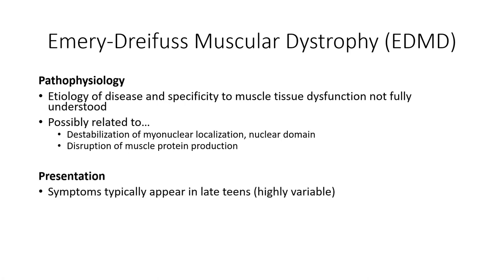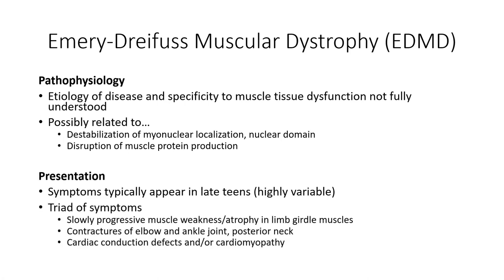As with limb-girdle muscular dystrophy, the onset of symptoms is highly variable depending on the specific mutation. The patient initially presents with slowly progressing muscular weakness, particularly in the limb-girdle musculature. Muscle contracture is also observed, particularly in the muscles controlling elbow, ankle, and cervical spine function, and can actually precede observed muscle weakness. Another consistent finding is indications of cardiomyopathy and conduction abnormalities related to the effects of the disease on cardiac tissue.